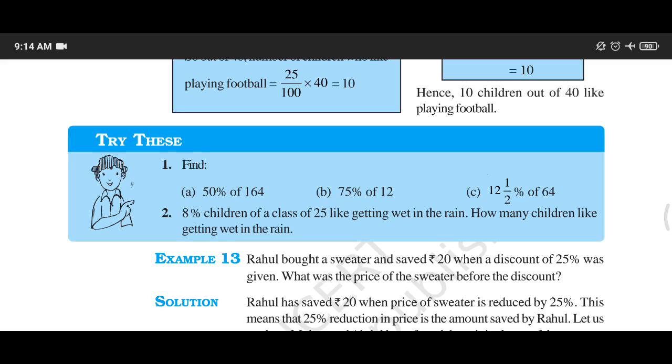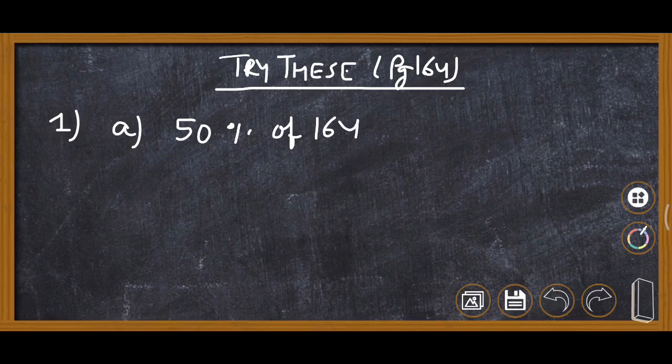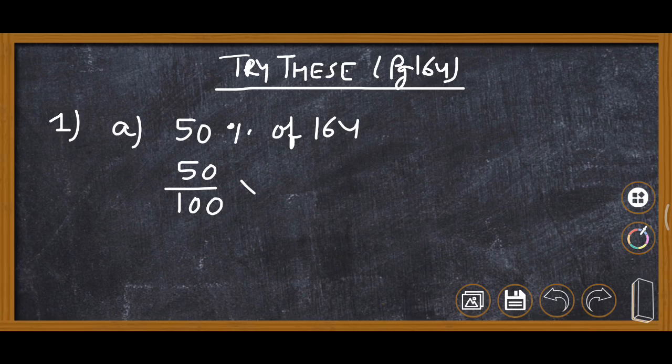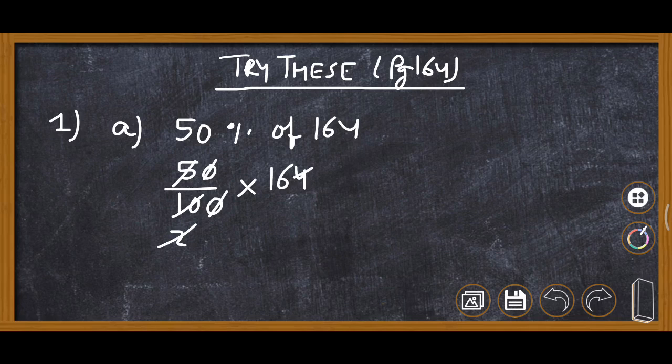Question number 1: 50% of 164. Here we are finding, so 50% we will write in fraction: 50 upon 100 multiply 164. Now cut 0 by 0, 5 2s are 10, and cut 2 and 164 as 8 and 2, 82.